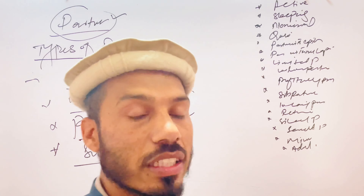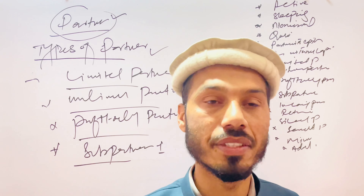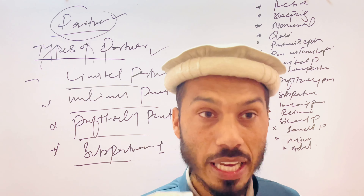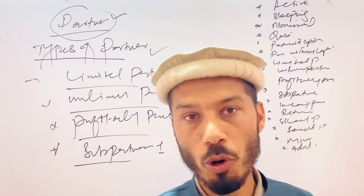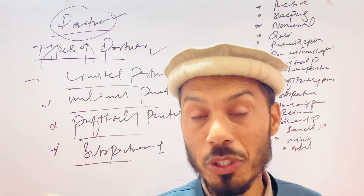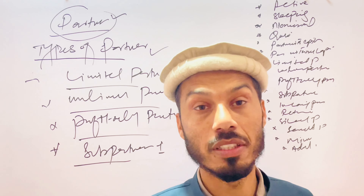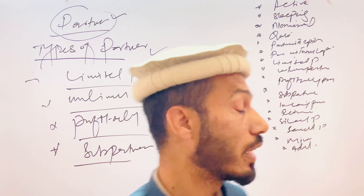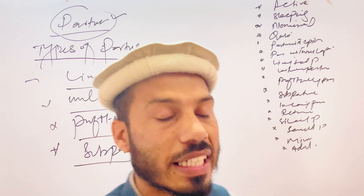The next type is the sub-partner. Sub-partners are those who are not actual partners of the business, but the actual partner distributes their profit and loss share with them from different firms. This type is called a sub-partner.